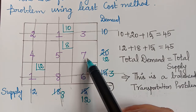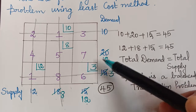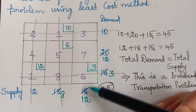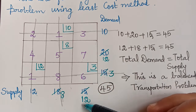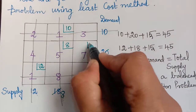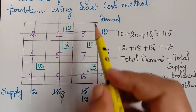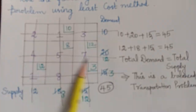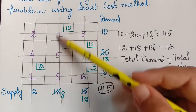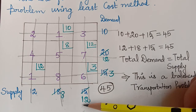The only remaining cell has demand 12 and supply 12 — both equal — confirming it is a feasible solution. We give the allotment of 12 for this cell and strike off the corresponding row and column. All rows and all columns are now struck off, so we can conclude the problem by writing the allotment table.